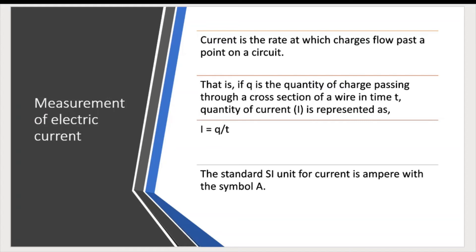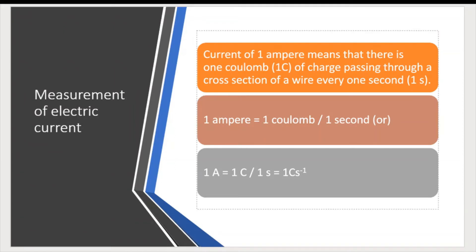Electric current is defined as the rate at which charges flow in a circuit. Let q be the quantity of charge in coulombs. If q coulombs of charge passes through a cross-section of wire in time t seconds, then the current I is equal to q divided by t. The standard SI unit of current is amperes, represented by the symbol A. One ampere means 1 coulomb of charge passes through a cross-section of wire every 1 second.